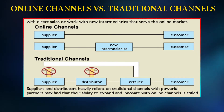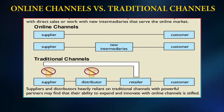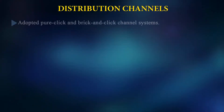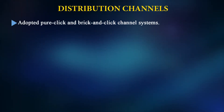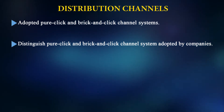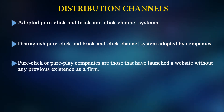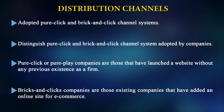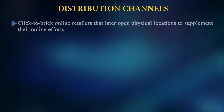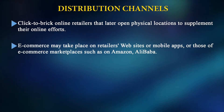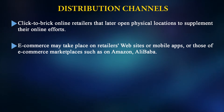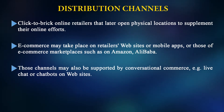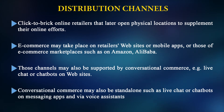Suppliers and distributors heavily reliant on traditional channels with powerful partners find that their ability to expand and innovate with online channels is stratified. Regarding distribution channels, companies have adopted pure click and brick-and-click channel systems. Pure click or pure play companies are those that launched a website without any previous physical existence. Brick-and-click companies are existing companies that have added an online site for e-commerce. Click to brick refers to online retailers that later open physical locations to supplement their online efforts. E-commerce may take place on retailer websites, mobile apps, or e-commerce marketplaces such as Amazon or Alibaba, also supported by conversational commerce like live chat or chatbots.